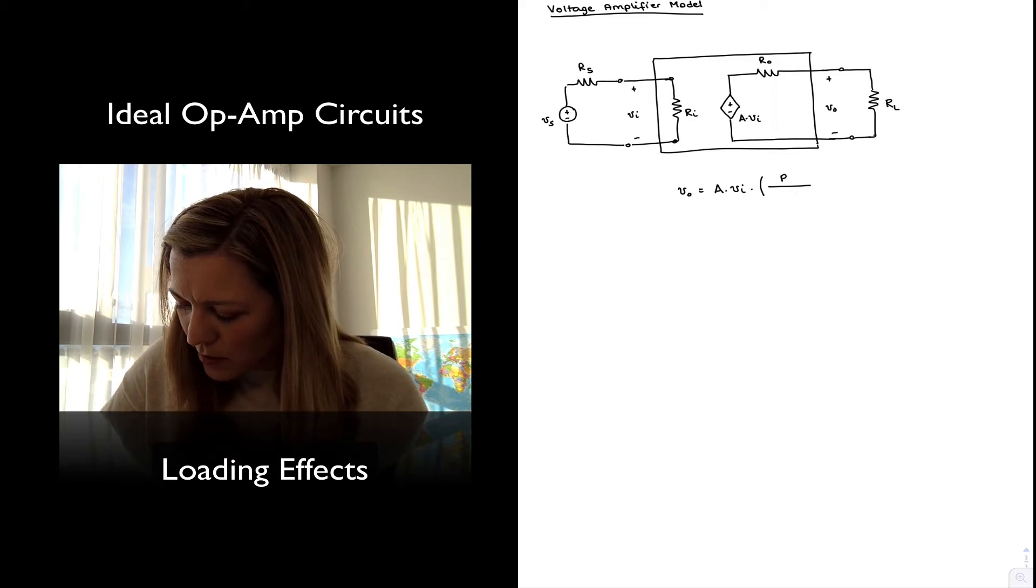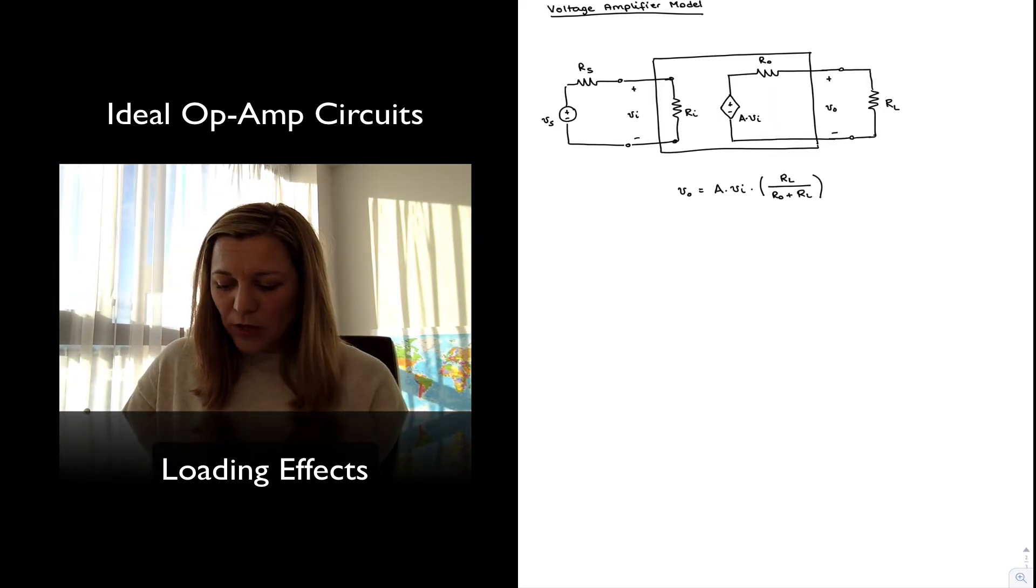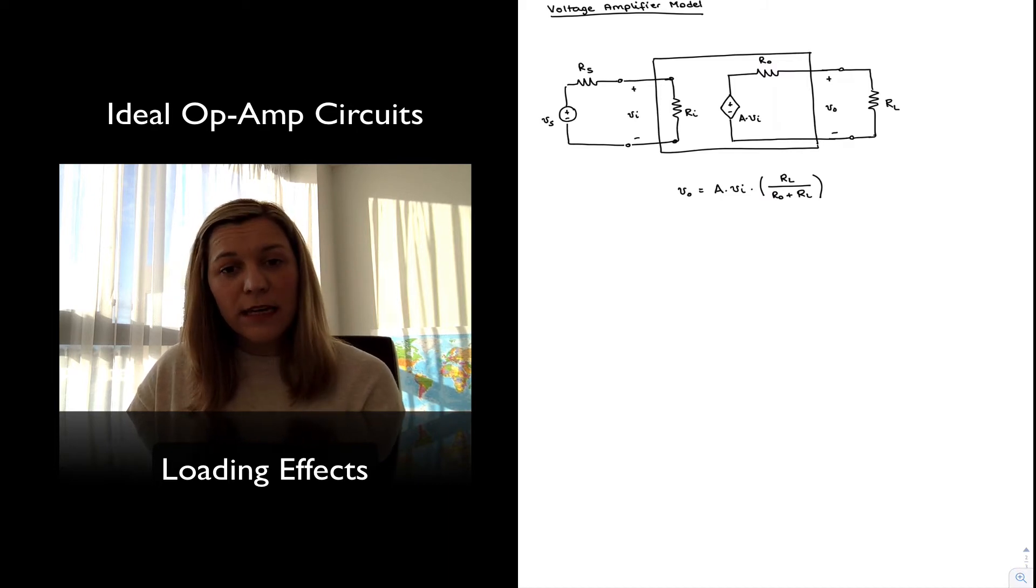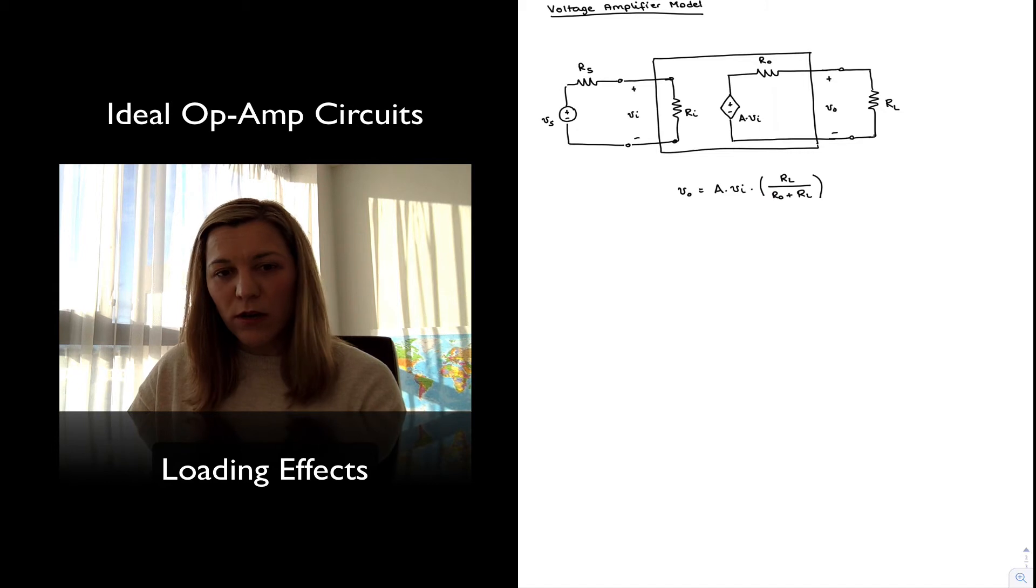It's going to be the result of voltage division between R_out and RL, so RL divided by R_out plus RL. This gives me a representation of the output voltage in terms of V_in, which is the voltage applied at the input terminal of the amplifier. But if I wanted to calculate the gain as the ratio of the output voltage versus the input signal that I'm applying at my source, then I also need to take into account the effects of the loading at the input.